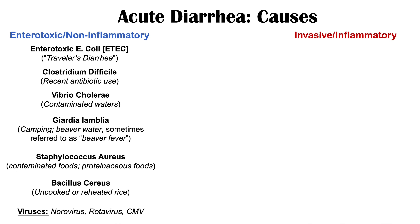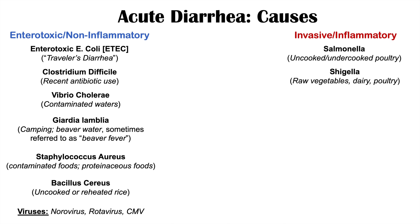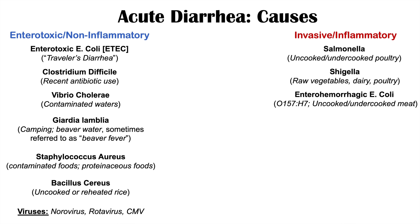What about the causes of invasive or inflammatory acute diarrhea? One cause is Salmonella, seen in uncooked or undercooked poultry or chicken, which can cause bloody diarrhea and possibly fever. We can also see Shigella as a cause, found in raw vegetables, unpasteurized dairy, and undercooked poultry. The Shiga toxin produced by Shigella causes significant damage to gastrointestinal epithelial cells, leading to bloody diarrhea.